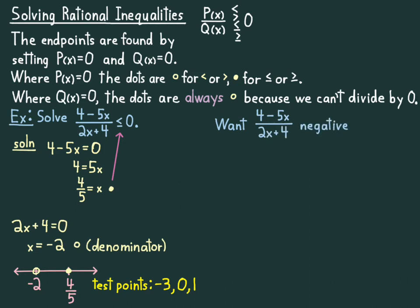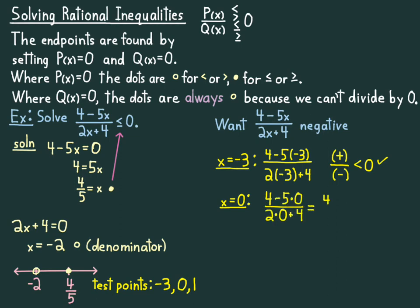And what you want is for that thing to be negative - (4-5x)/(2x+4) to be negative. So you want one of the two factors, the top or bottom, to be positive and one to be negative. So if I try -3, I just wrote it all out here. I get positive over negative, which is negative, and that's what I wanted. So that checks off. If I try x = 0, I get 1, which is greater than 0, not what I wanted. If I try x = 1, I get -1/6, which is negative. So that checks off.